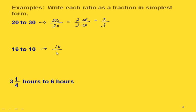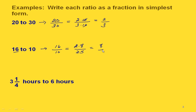For the next example, the 16 goes on top since it came first. To reduce to simplest form, both numbers are divisible by two, so we have two times eight and two times five. Canceling the twos, we get eight-fifths. For ratios, we leave these as improper fractions.